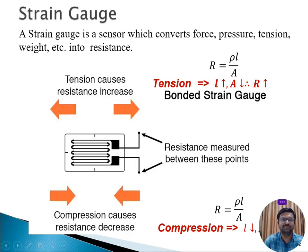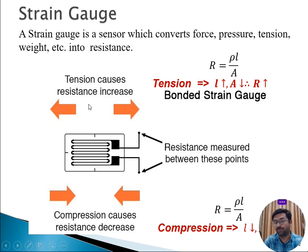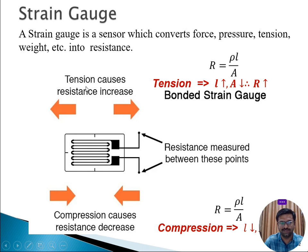Coming to the strain gauge — a strain gauge is a sensor which converts a force, applied pressure, tension, or weight into a resistance. Whenever a pressure is applied over a strain gauge, it experiences tension and compression.